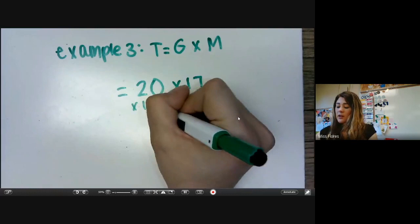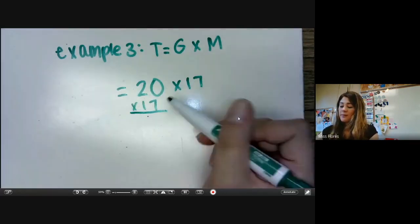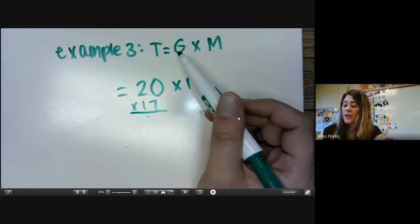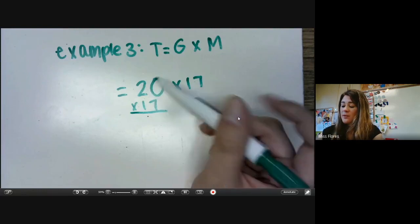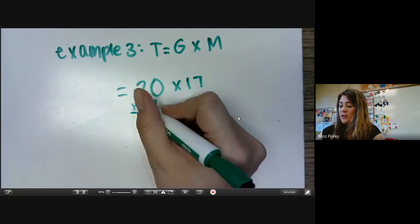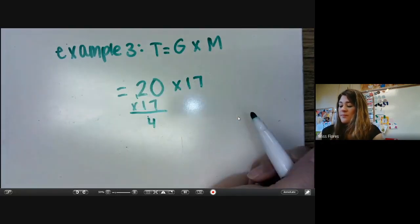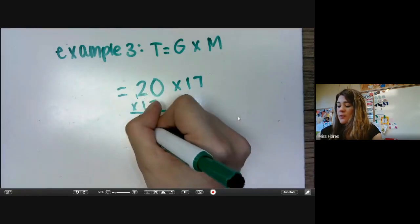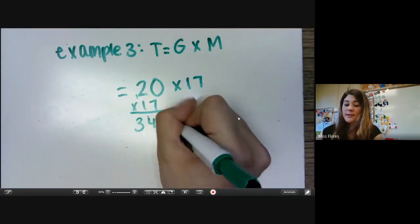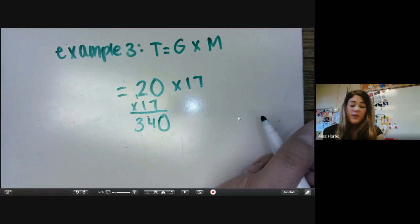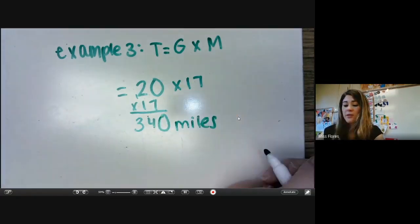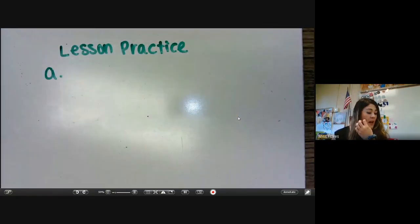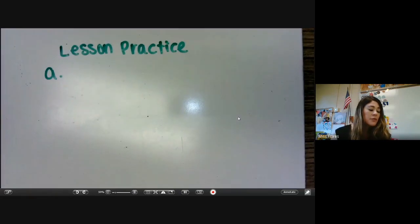I'm going to rewrite that here so that it's easier. We could actually just multiply seven times two, which is 14. Then two plus one is three, so 34, and then we add our zero, and we get 340 miles.